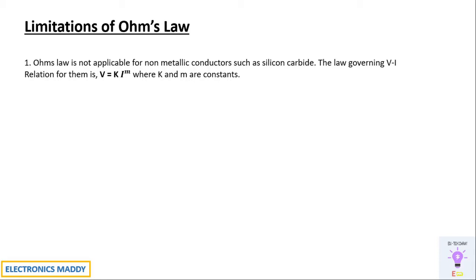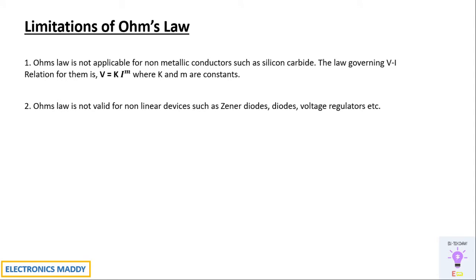The second limitation is that Ohm's law is not valid for non-linear devices such as Zener diodes, diodes, voltage regulators, etc. People tend to make mistakes about this even in higher education such as a master's degree. Ohm's law is strictly not applicable to switching devices such as diodes and Zener diodes. With respect to rectifiers, inverters, all these circuits have diodes, switches, and thyristors — Ohm's law is not valid there. Be very careful with this point.